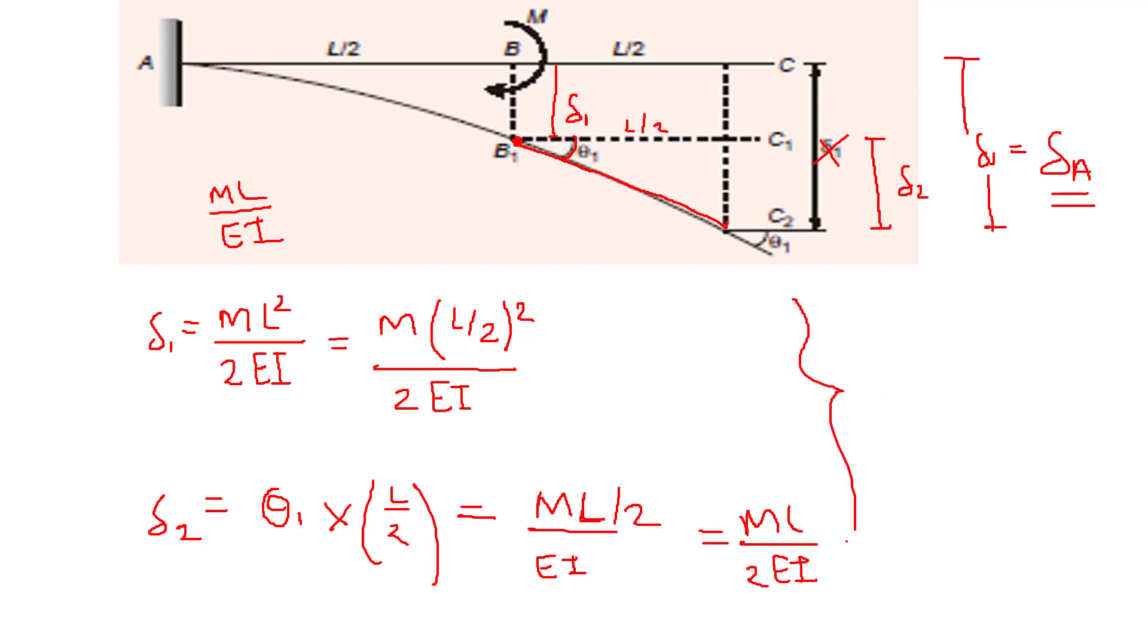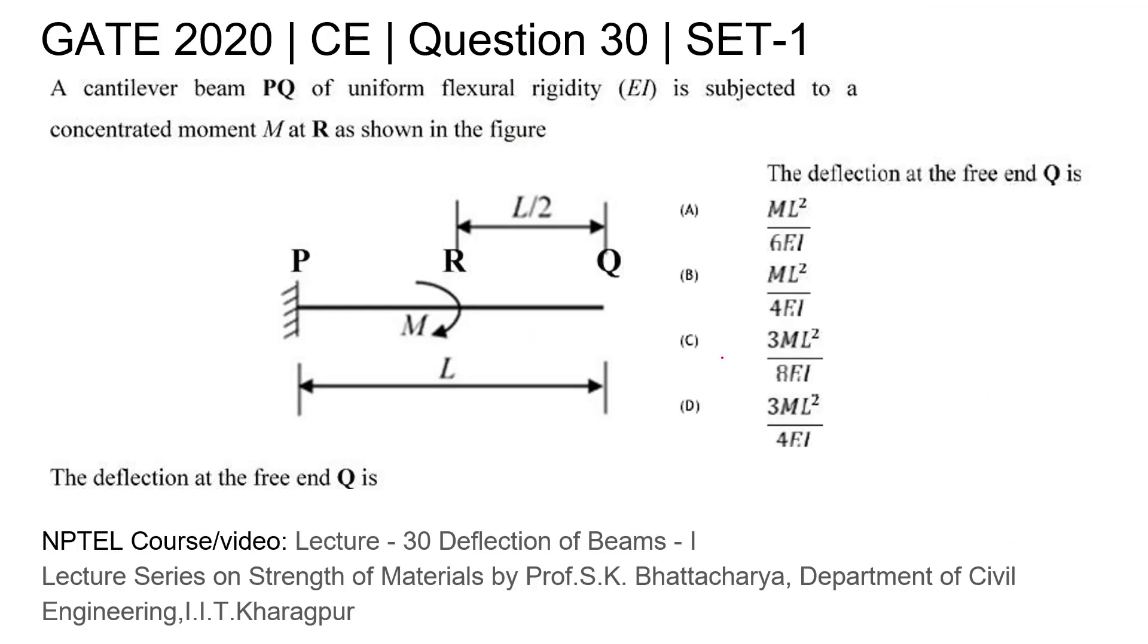Adding these two, delta one plus delta two will be our final delta. So our answer will be 3ML² upon 8EI. Our final answer will be 3ML² upon 8EI, option number C. Thank you.